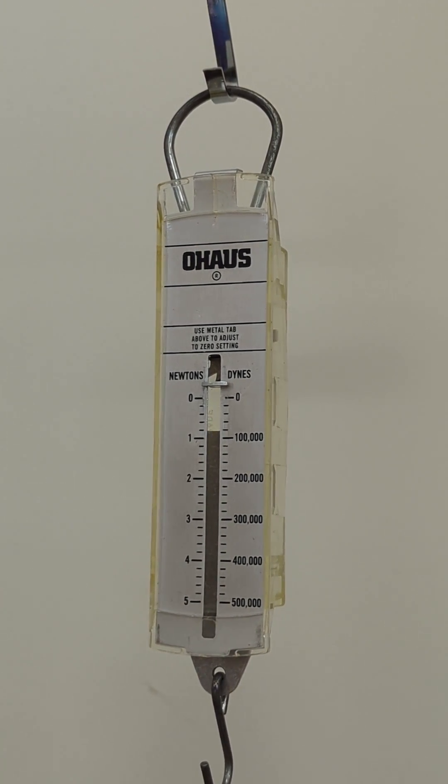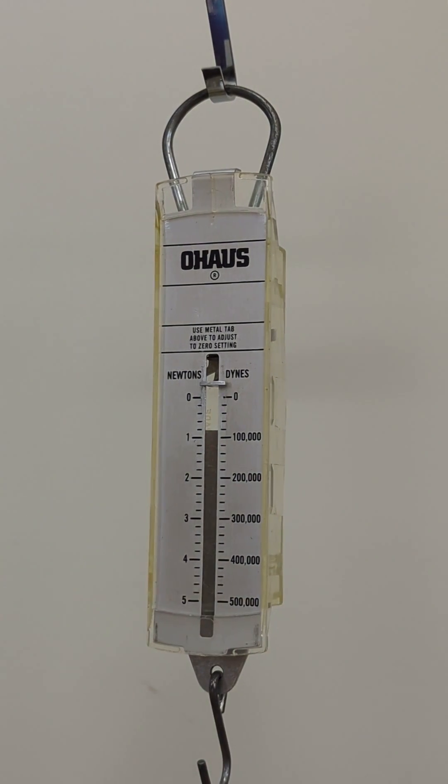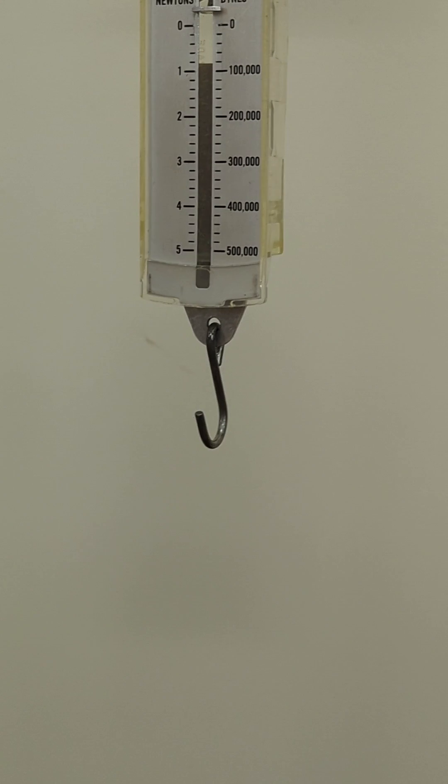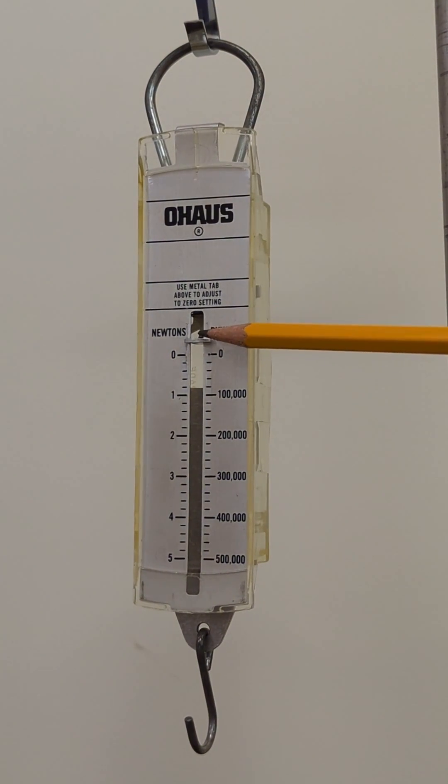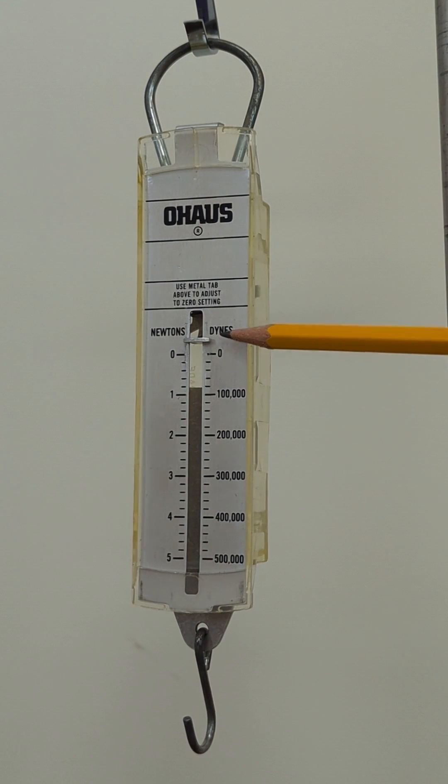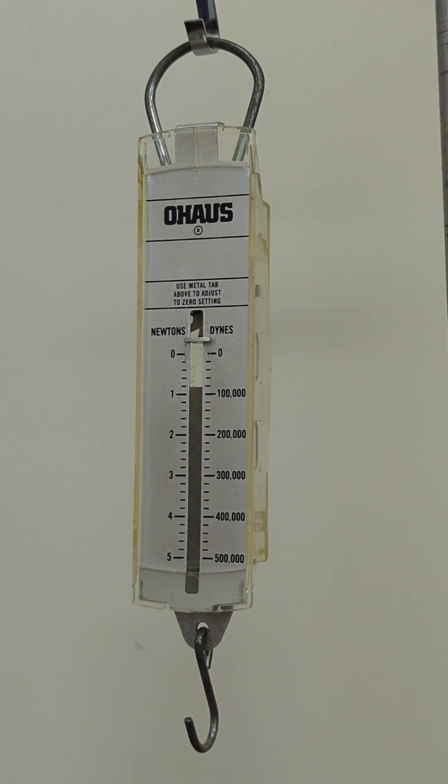First of all, notice that in order to measure accurately, since there's nothing hanging from the hook here, we would need this bar to be at zero. So calibrating means that we're going to make it so it's going to measure accurately by starting at zero.